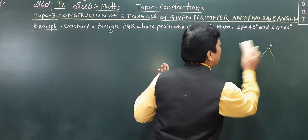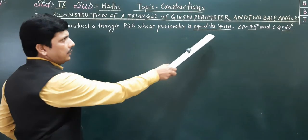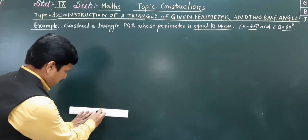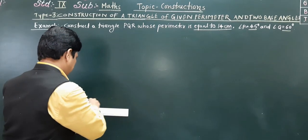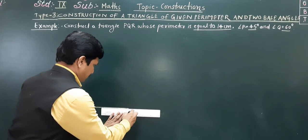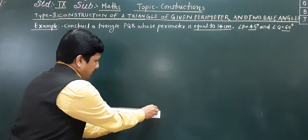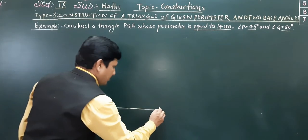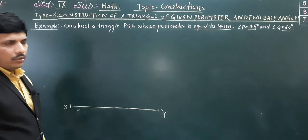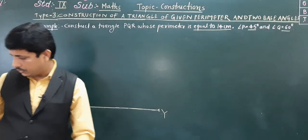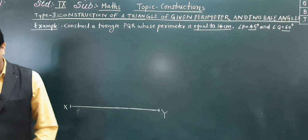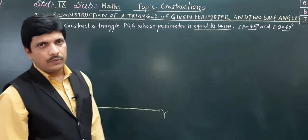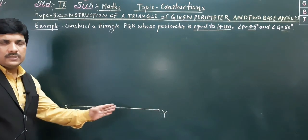So this construction is also possible and we are going to start now. According to the given information, we are taking a line segment of 14 centimeters — equal to the perimeter. I am taking it here; this is X and this is Y. I have taken a little more distance here for visibility, but you have to take exactly 14 centimeters. XY is the base.